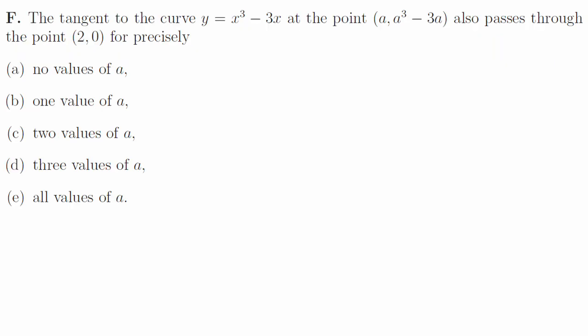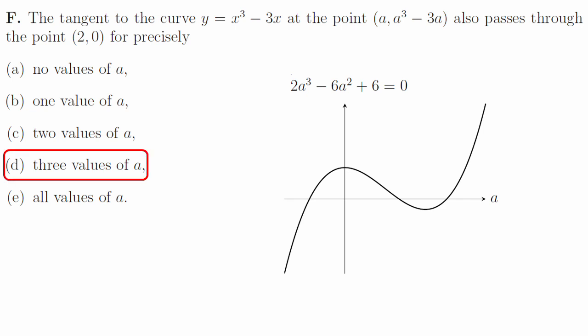1f. We can work out the tangent at a and send it through the point 2, 0 to get a cubic for a. We can find the turning points of that cubic in a to work out that it's got 3 roots. The answer is d.